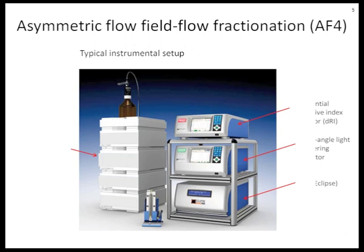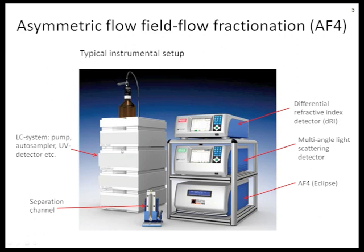Due to the low shear forces and gentle separation mechanism, we can also fractionate very fragile samples such as aggregated polymer structures. This is what a typical instrumental setup looks like: we have an LC system that generates the flows and handles sample injection, the separation channel where the actual separation takes place, the AF4 box called the Eclipse which contains valves controlling different flows, a multi-angle light scattering detector, and a refractive index detector for concentration determination.